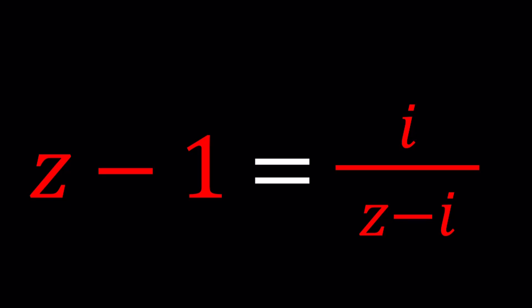We have z minus 1 equals i divided by z minus i. And we're going to be solving for z values.